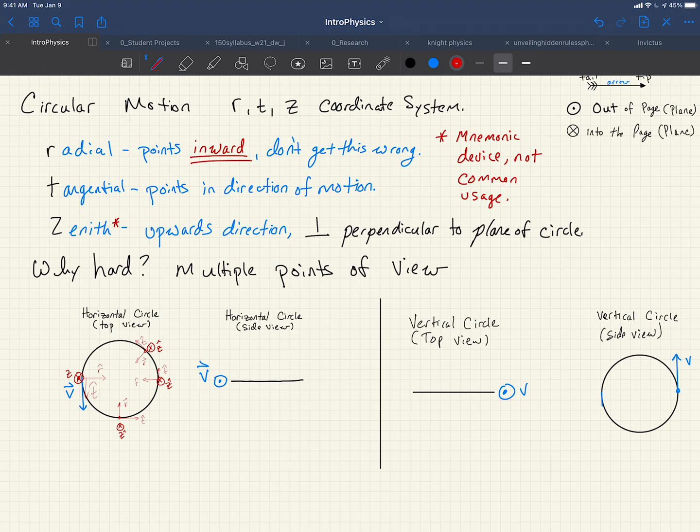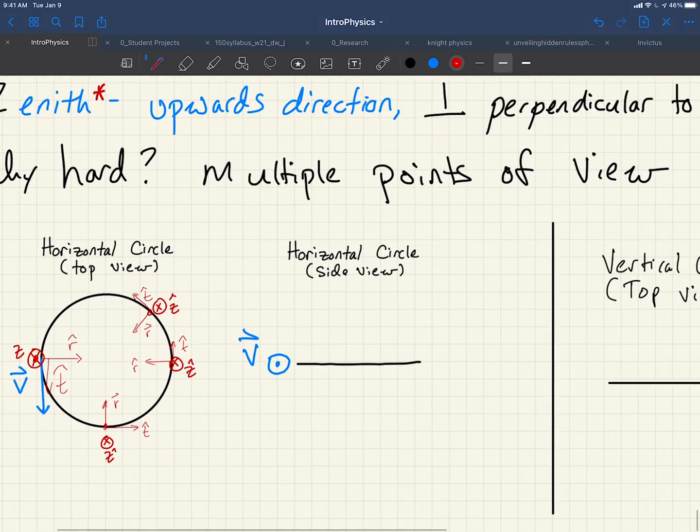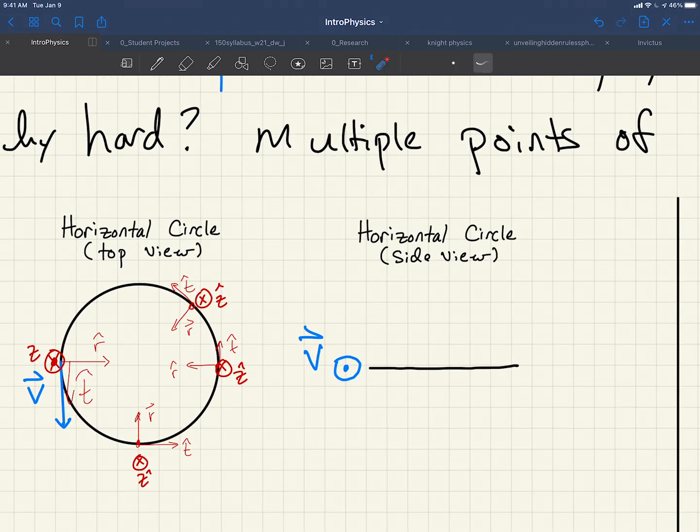So another thing that makes circular motion a difficult thing for many students is that we have to consider multiple perspectives. What does that mean? You have to consider rotating an object. So we're thinking about something going in circular motion in a horizontal circle. We're thinking, from this view, we're sort of looking top down, as we're watching it go around and around. You can think of it looking at the ground and something is going around and around in a circle.